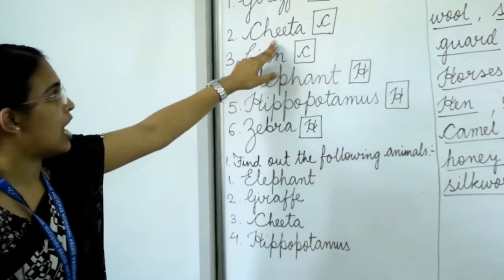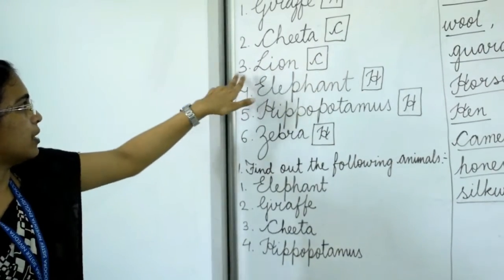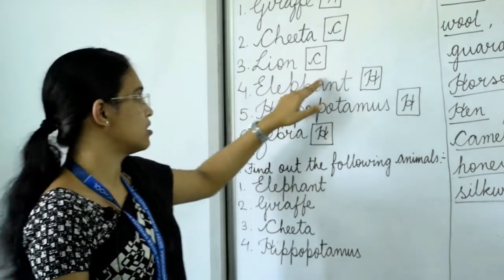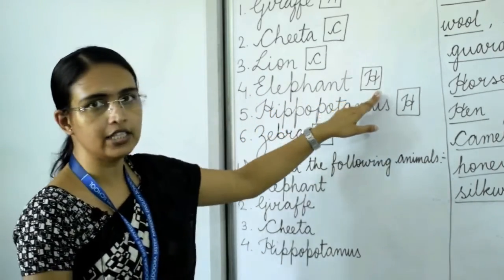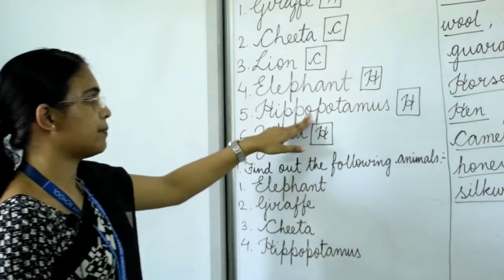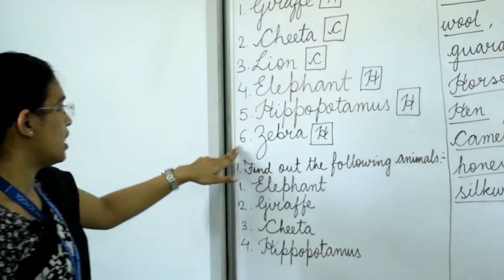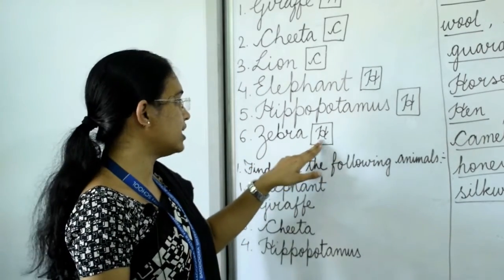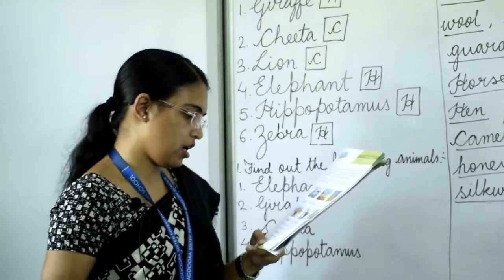Number two is cheetah — write cheetah in the dash and C for carnivorous in the box. Number three is lion — write lion and C for carnivorous. Number four is elephant — write elephant and H for herbivorous. Number five is hippopotamus — hippopotamus is also a herbivorous animal, write H. Number six is zebra — zebra is also a herbivorous animal, write H.